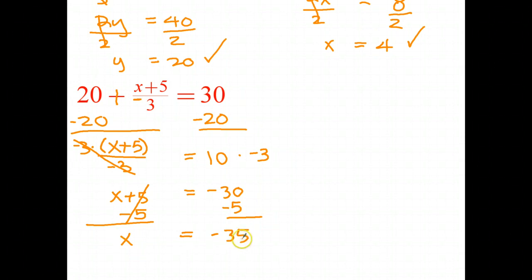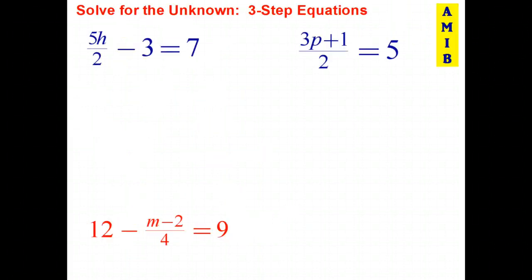Let's do a quick check on that one. Negative 35 plus 5 is negative 30. Negative 30 divided by negative 3 is 10. And 20 plus 10 is 30 — I checked it against my modified equation, which turned out to be easier. Try these three on your own, please — stop the video, and once you've finished, check your answers.